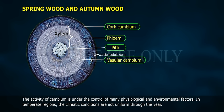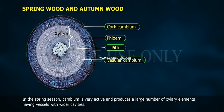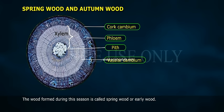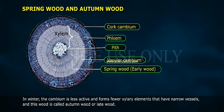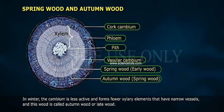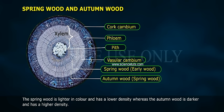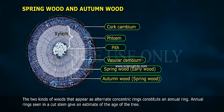Springwood and Autumnwood. The activity of cambium is under the control of many physiological and environmental factors. In temperate regions, the climatic conditions are not uniform throughout the year. In the spring season, cambium is very active and produces a large number of xylem elements having vessels with wider cavities — the wood formed during this season is called springwood or early wood. In winter, the cambium is less active and forms fewer xylem elements with narrow vessels, and this wood is called autumnwood or latewood. The springwood is lighter in colour and has a lower density, whereas autumnwood is darker and has a higher density. The two kinds of xylem elements appear as alternate concentric rings and constitute an annual ring.